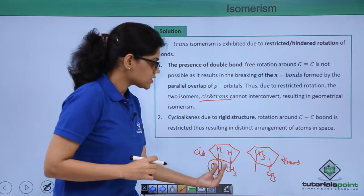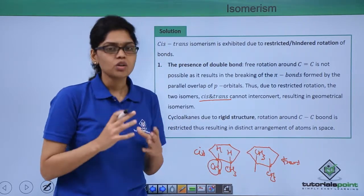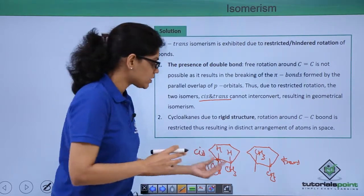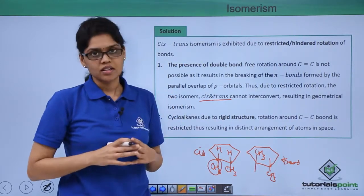You can see that the interconversion from this system to this system, that is from cis to trans isomer, is not possible due to the rigidity of the structure here. That is if we try to rotate this methyl group we end up breaking the structure of the ring which is not desirable.